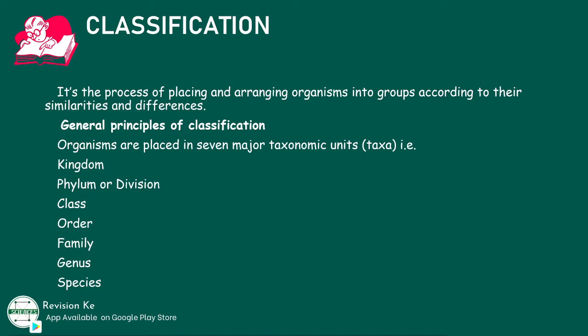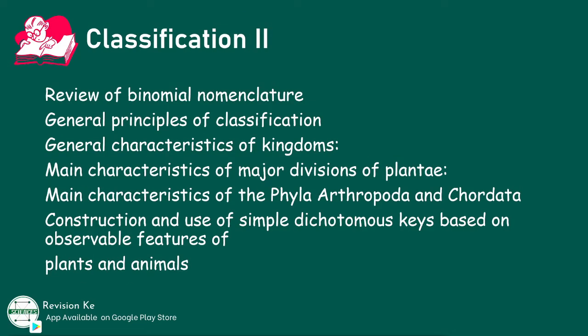Kingdom is the first and the largest rank, and there is all that which we covered in Classification 1 or the introduction to Classification 2. Having understood all that, our next objective would be to state the main characteristics of Arthropoda, Chordata, and state the main characteristics of major divisions of Plantae, and state the characteristics of classes of Spermatophyta.